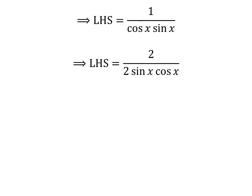Multiplying the numerator and the denominator of a fraction by a common factor does not change the value of the fraction. So let us multiply the numerator and the denominator by 2. Hence the left hand side of the identity is equal to 2 upon 2 times sin of x times cosine of x.